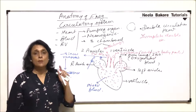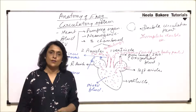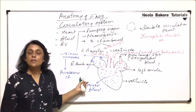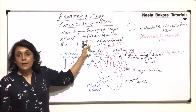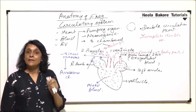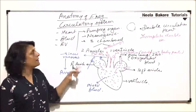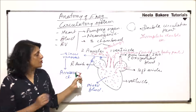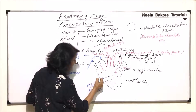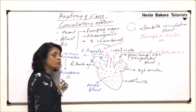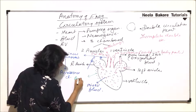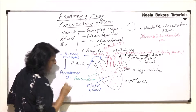The heart shows double circulation, but the partition or separation of oxygenated and deoxygenated blood is not complete — that is why we call it incomplete double circulation. It is neurogenic, and the stimulus for the heartbeat arises from the nervous system. It is a three-chambered heart. The heart is also covered with the pericardium, which protects it from mechanical shock.